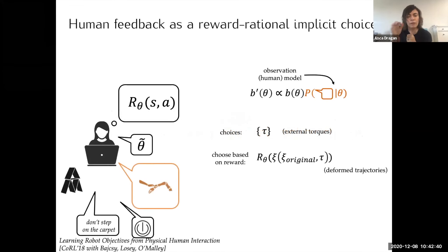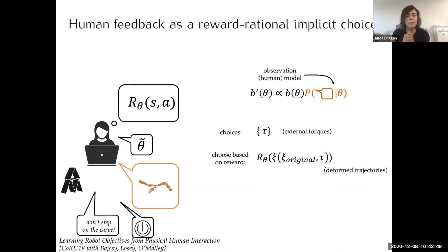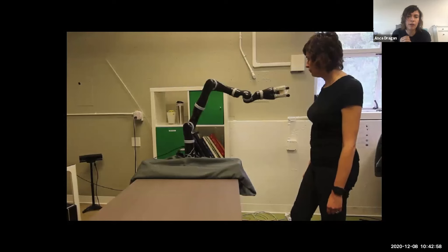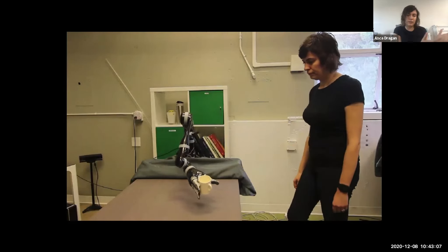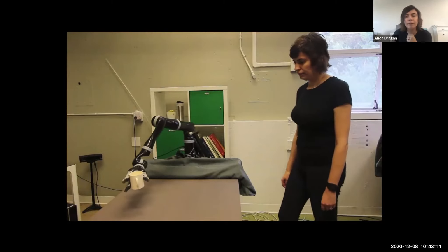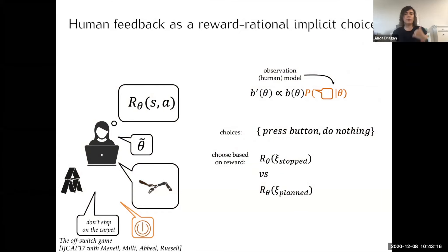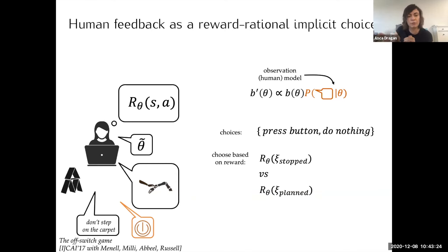When the person pushes on the robot, the choice is over an external torque they're applying, inducing a deformed trajectory — picking a deformed trajectory better than other ones. The robot does a belief update interpreting that torque as a choice and now keeps the cup closer to the table, realizing that better explains the choice made. When the person switches the robot off, they could have done nothing but chose to switch it off — meaning the reward of the resulting trajectory (robot stopped for the time horizon) is better than doing nothing and letting the robot continue. That's an implicit choice.